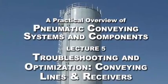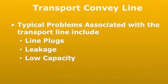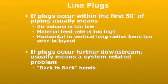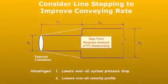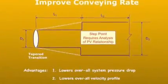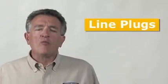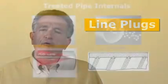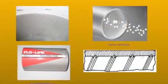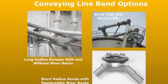In this second of two lectures dealing with the troubleshooting and performance optimization of major components of the pneumatic conveying system, the conveying line and product receivers are discussed in length by Jack Hilbert of Pneumatic Conveying Consultants. The types of equipment are presented, along with their functionality and performance characteristics.